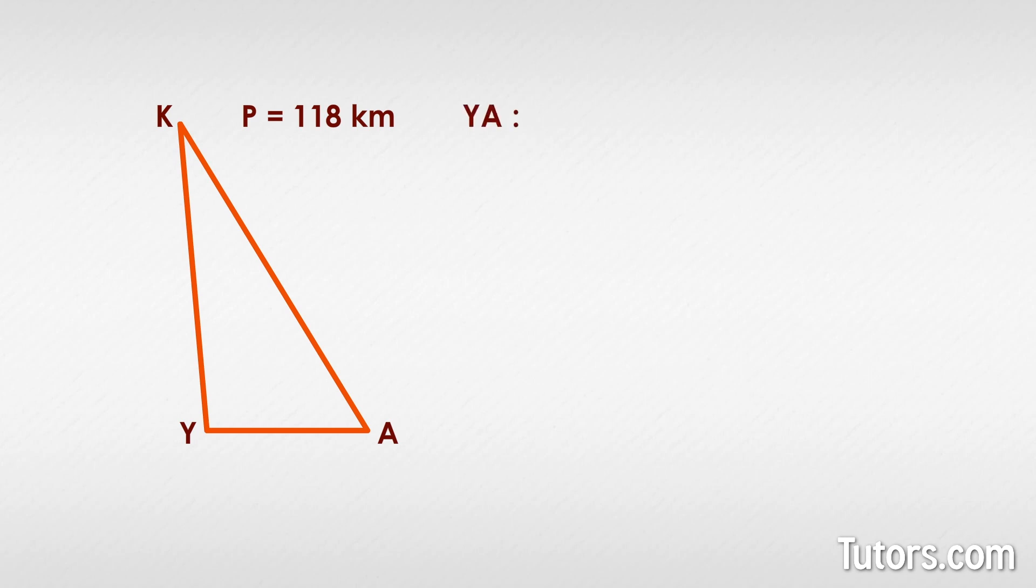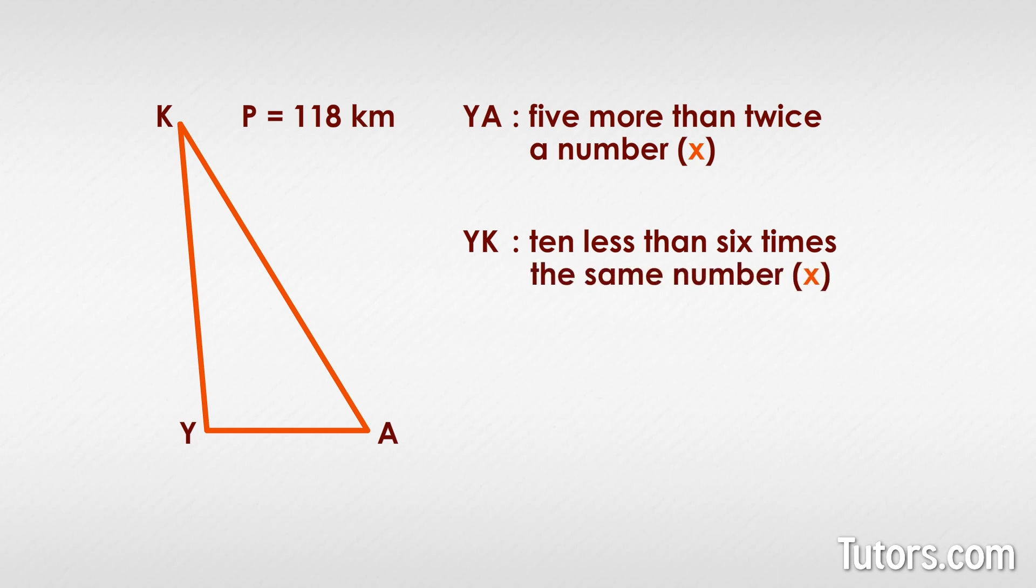We have side YA as five more than twice a number, and YK as ten less than six times the same number, and side AK as 15 more than four times the mystery number. What are we supposed to do with all of that?